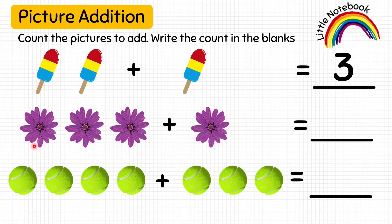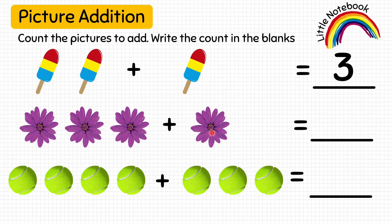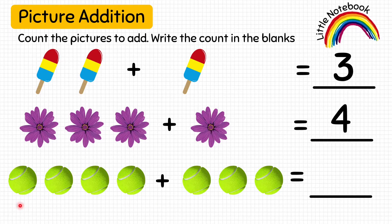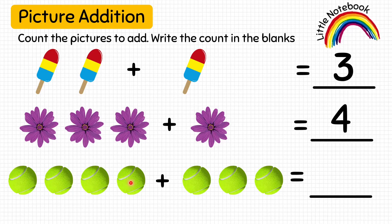Now the next picture: three flowers plus one flower equals how many flowers? Let's count: one, two, three, four. Write four in the blank. The next picture is of balls — four balls plus three balls equals how many balls? Let's count: one, two, three, four, five, six, seven. Write seven.